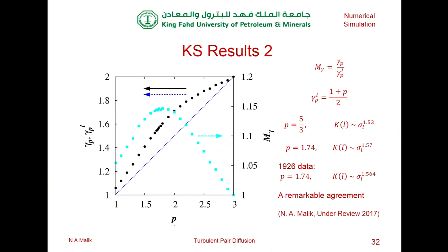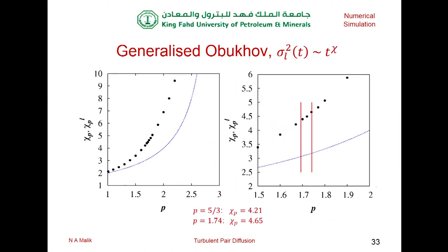I think the agreement with the 1926 revised data is a little coincidental given the large errors, and I wouldn't read too much into how close these two things are. Nevertheless, it is interesting — remarkably good agreement — and at least it suggests the theory is reasonably plausible. For the generalized Obukov scaling: the blue line is locality, and for the Kolmogorov case we get chi=4.21, already much larger than T-cubed. For the intermittency case, we get chi=4.65, which is much larger than T-cubed. This confirms the non-linear sensitivity.